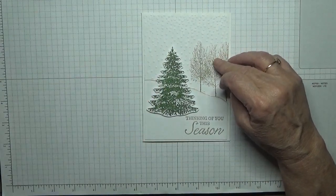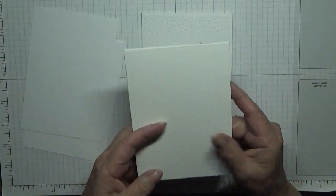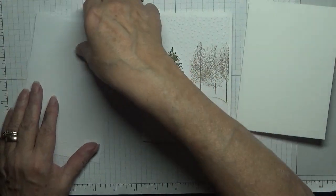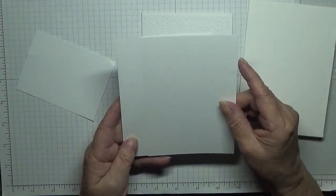To make this card I have got a blank card base of eight and a quarter by five and seven-eighths, scored at four and one-eighth.